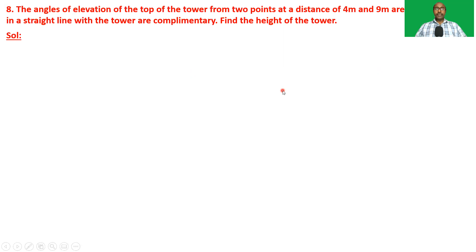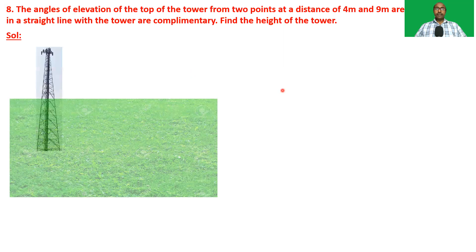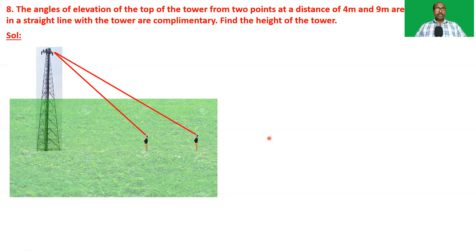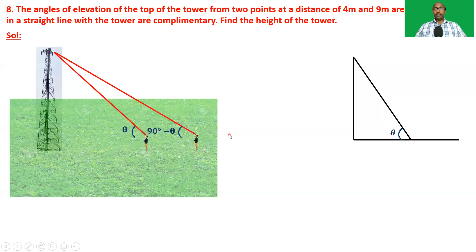That is the question. Now the solution — first, imagine the situation. This is the tower, and this is the observer. He is observing the top of the tower from two points. The angles of elevation are given as complementary, that is their sum is 90 degrees. If we take one angle as theta, then the second one is 90 minus theta. Now draw the picture for this situation.